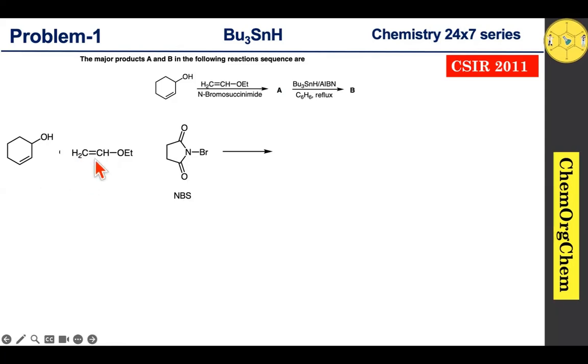This alkene is more electron-rich since the ethoxy group readily feeds electrons to this center, which makes this pi bond electron-rich. Compared to cyclohexenol, that kind of facility is not available; therefore, ethyl vinyl ether is going to react with NBS initially.